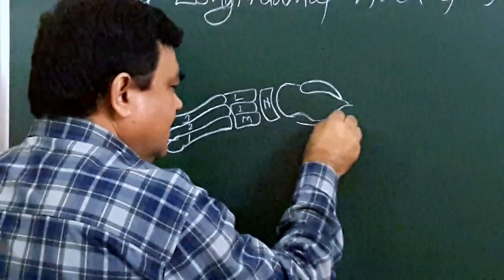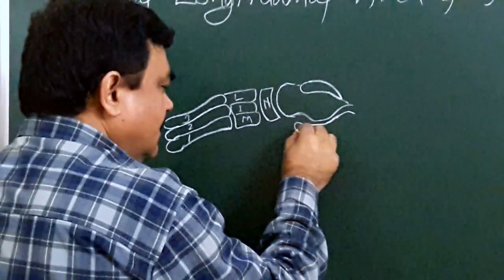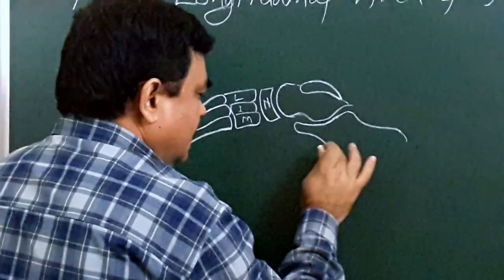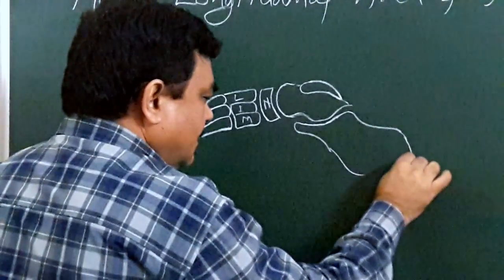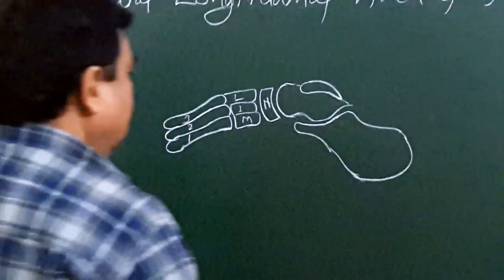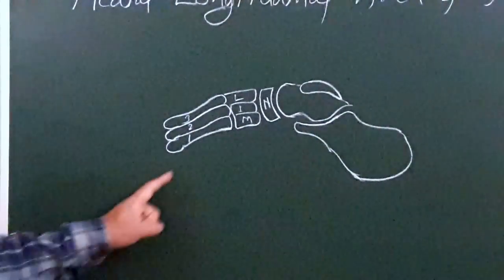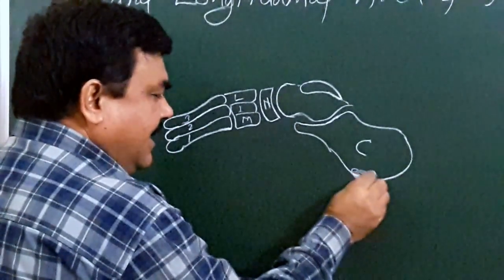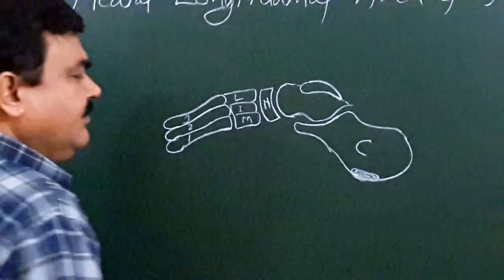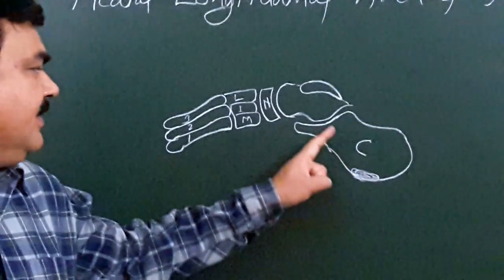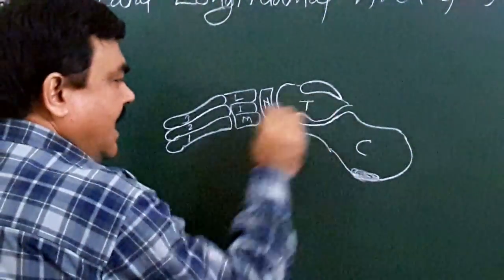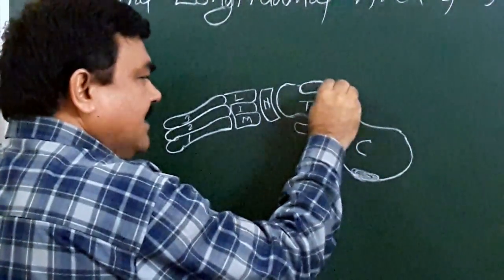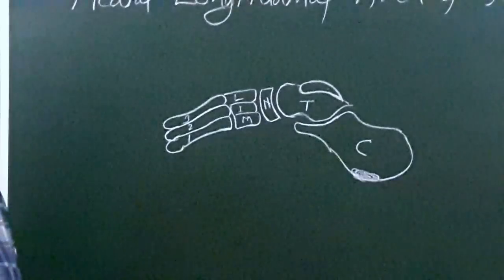And here is the calcaneum. This is the calcaneum. Here is the medial tubercle of the calcaneum. Here is the talus, and here is the superior articular surface of the talus.